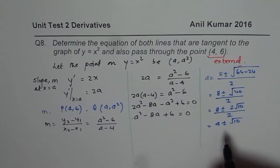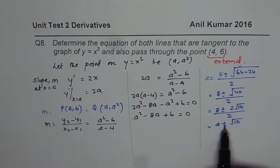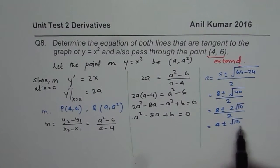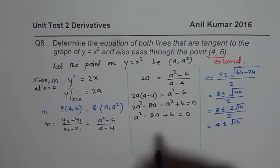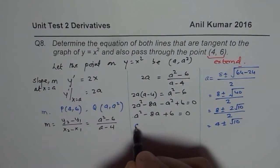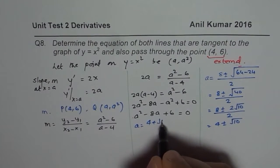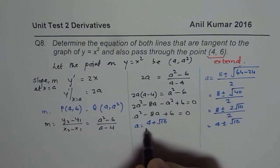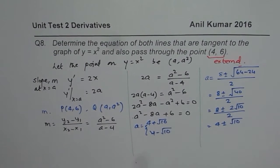So the two values of A are: A = 4 + √10 or A = 4 - √10. These are the two x-coordinates of the points on y = x² where the tangent lines from (4, 6) touch the curve.